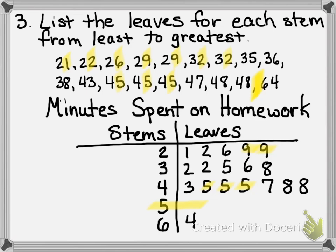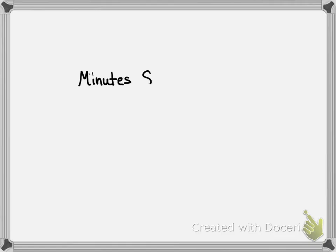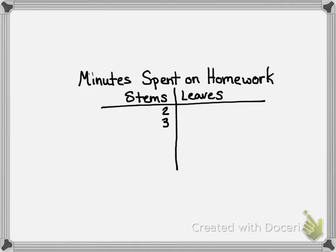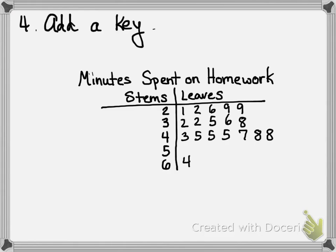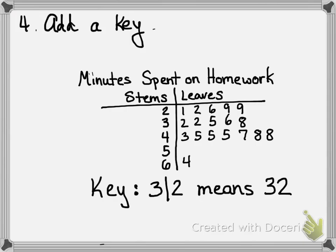I want to make sure I list all my numbers however many times they occur in my data. I also want to point out that I don't put a comma or anything between the numbers as I list them — just a list of numbers with no comma, no period, no separation of any kind except a small space. So I've got my stems and my leaves. There's one more thing left to do: make my key. I write the word 'key,' choose one set of numbers — in this case, three and two — and show that 3|2 means thirty-two, so someone else can read my stem and leaf plot.